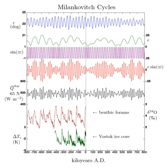Climate records contained in a 1,700-foot core of rock drilled in Arizona show a pattern synchronized with Earth's eccentricity, and cores drilled in New England match it.